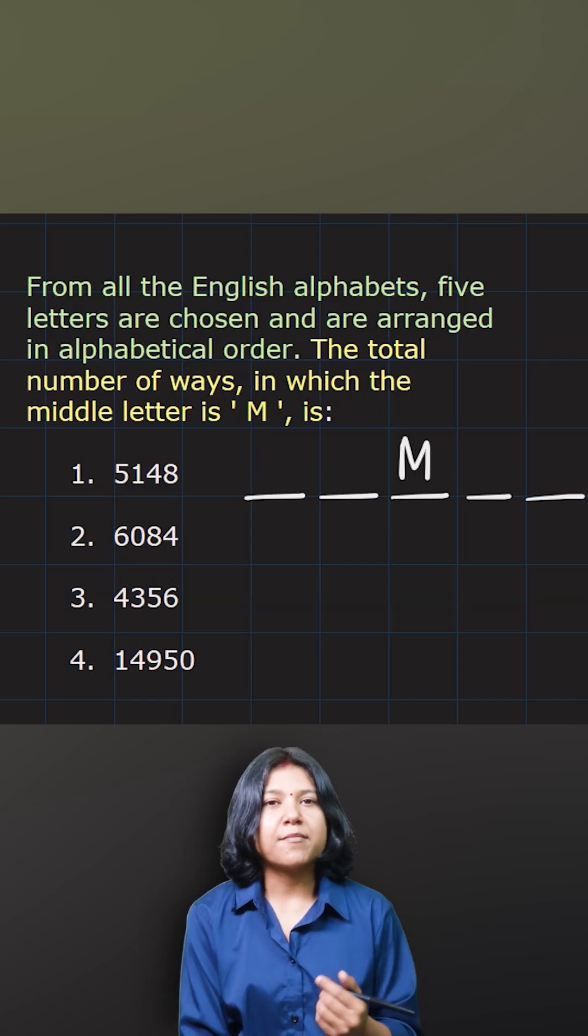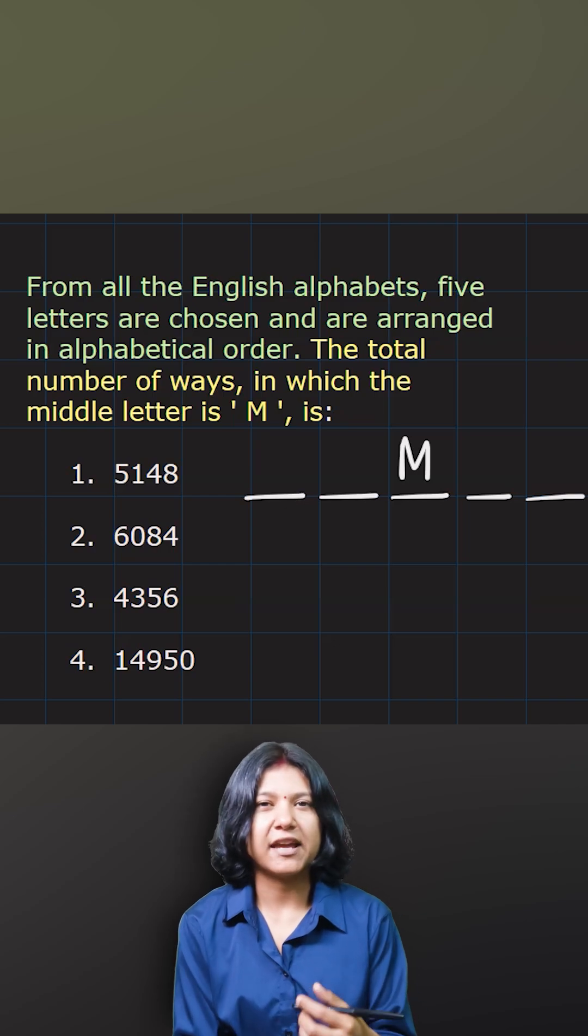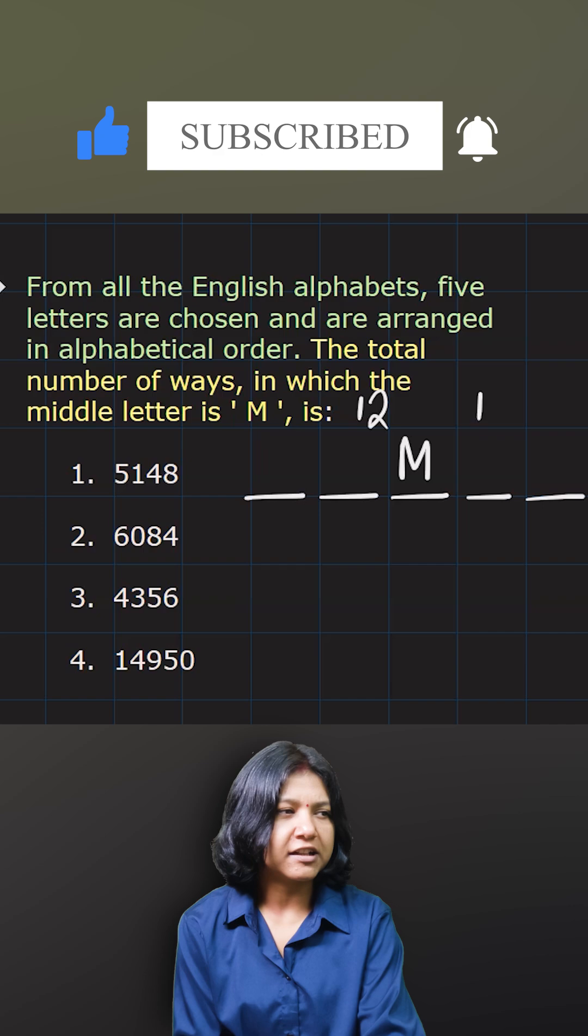Now think about the alphabets that come before M. I have a total of how many letters before M. M is the 13th letter. So I have 12 letters here and I have 13 letters here.